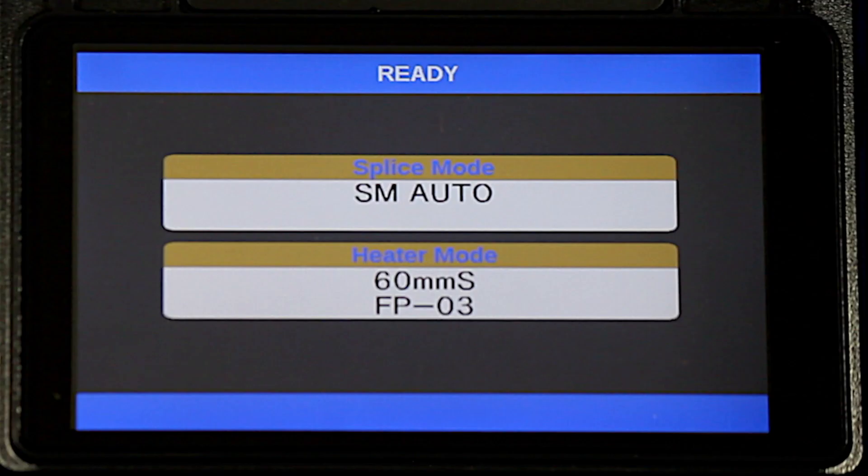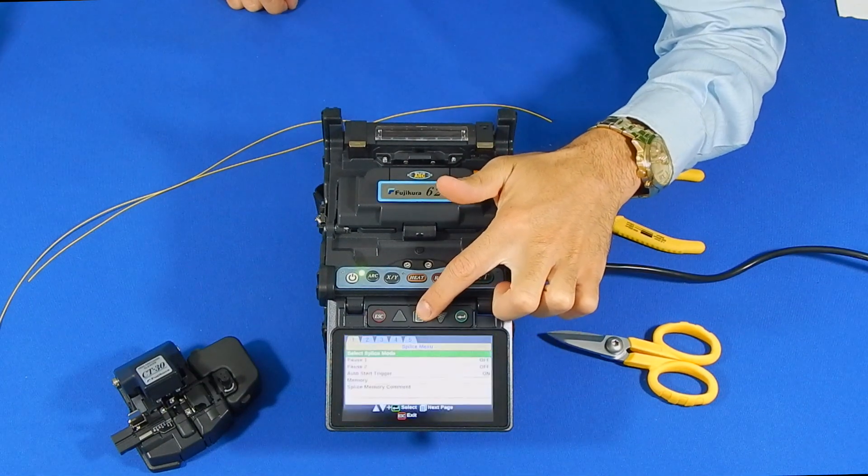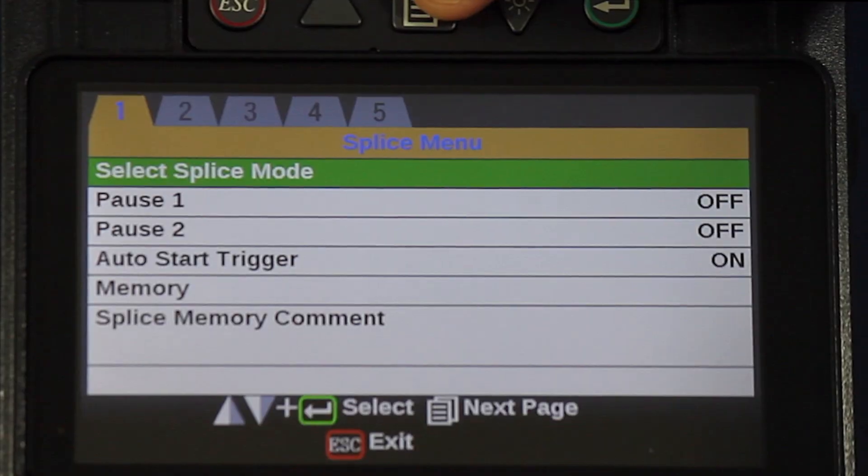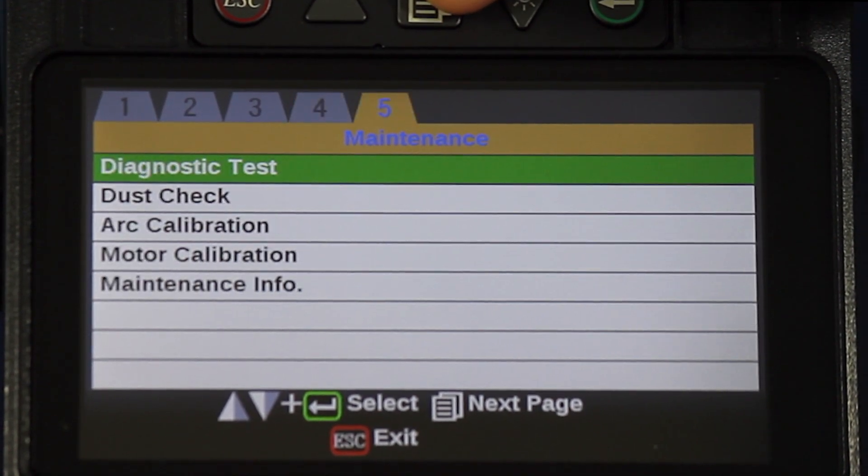Before any splicing, an important practice is to calibrate the fusion splicer. This is called an arc calibration. On the 62S, press the menu key, scroll over to window number 5 and select arc calibration.